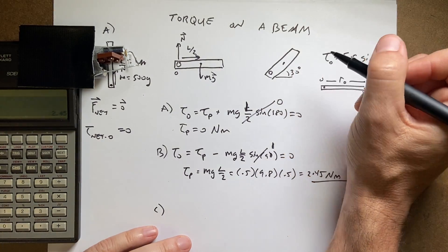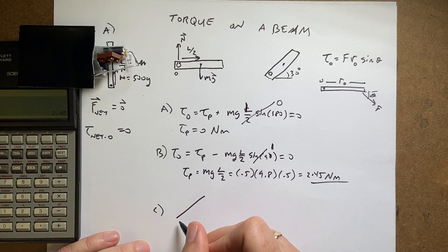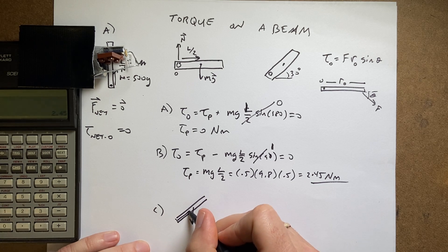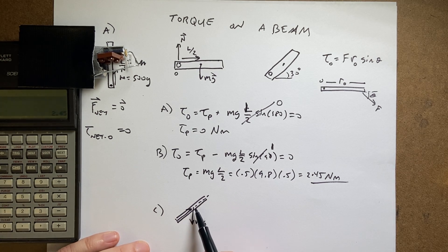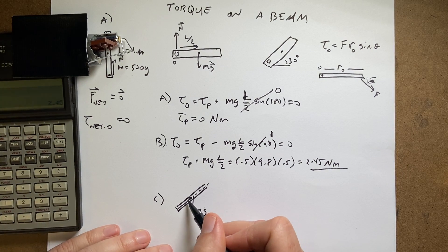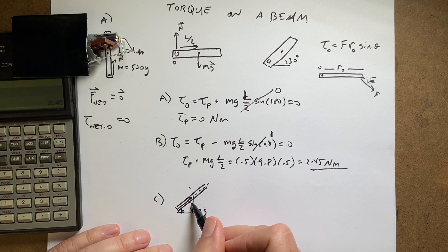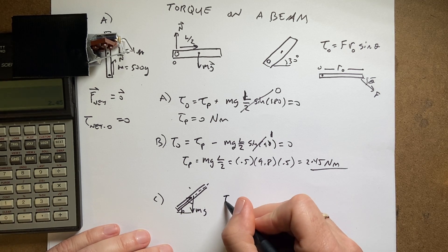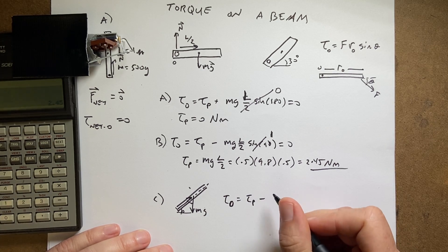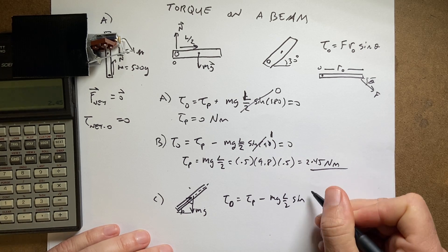Okay, now let's do C. Really the only difference in C is this angle θ. So let me just draw that over here. So there's mg, there's r. What's the angle between those? I mean technically you can use either angle. I'm going to use the smaller angle right here just because it's easier. So this angle is 30 degrees, so that angle would be 60 degrees. So τ_o equals τ_p. It's again going to be a negative torque the way I drew it: mg·(L/2)·sin(60).